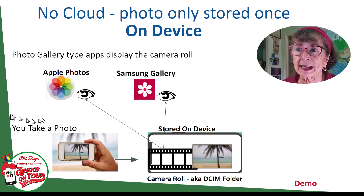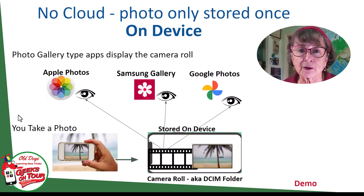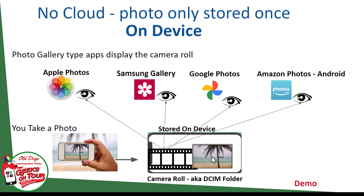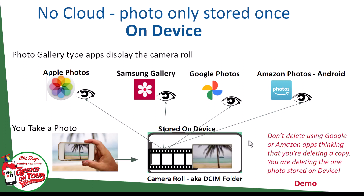These two apps came pre-installed with your phones, but there are others that do the same function — Google Photos, for example. If you have Google Photos installed it will show you the photos that are in your camera roll. They are not copied to Google Photos — very important to know. The same with Amazon Photos; if you use the Amazon Photos app on your Android it is also a gallery type of app. Do not delete a photo using Google Photos or Amazon Photos thinking that you're deleting a copy. No — you are deleting the photo from your phone. It may be your only copy.